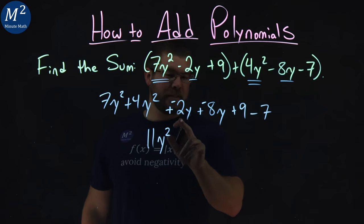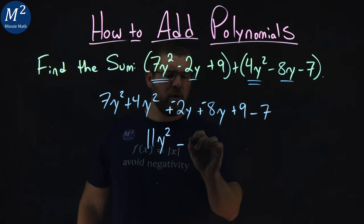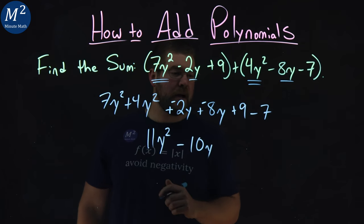Plus a negative 2y plus a negative 8y is a negative 10y, or minus 10y. Bring it back to subtraction.